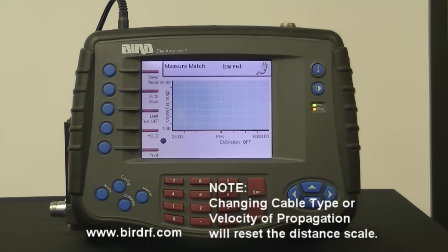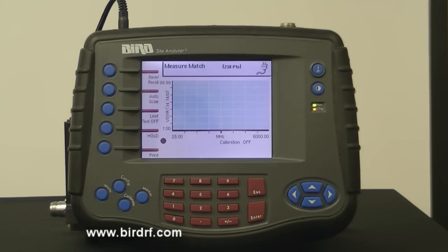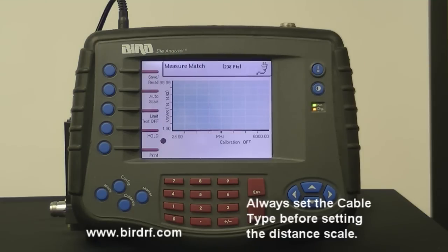Keep in mind, changing the cable type or the velocity of propagation will reset the distance scale to the maximum possible distance. Therefore, always set the cable type before setting the distance scale.